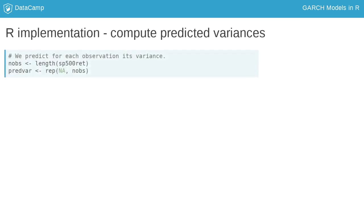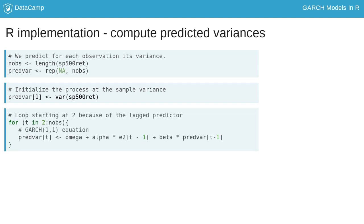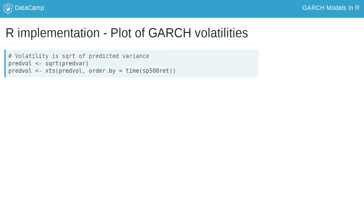Since the GARCH process is recursive, you need a loop to compute the next variance based on the previous variance. The first variance is set to the sample variance. The next ones follow from the GARCH equation. Note that the predicted volatility is defined as the square root of the GARCH variance.